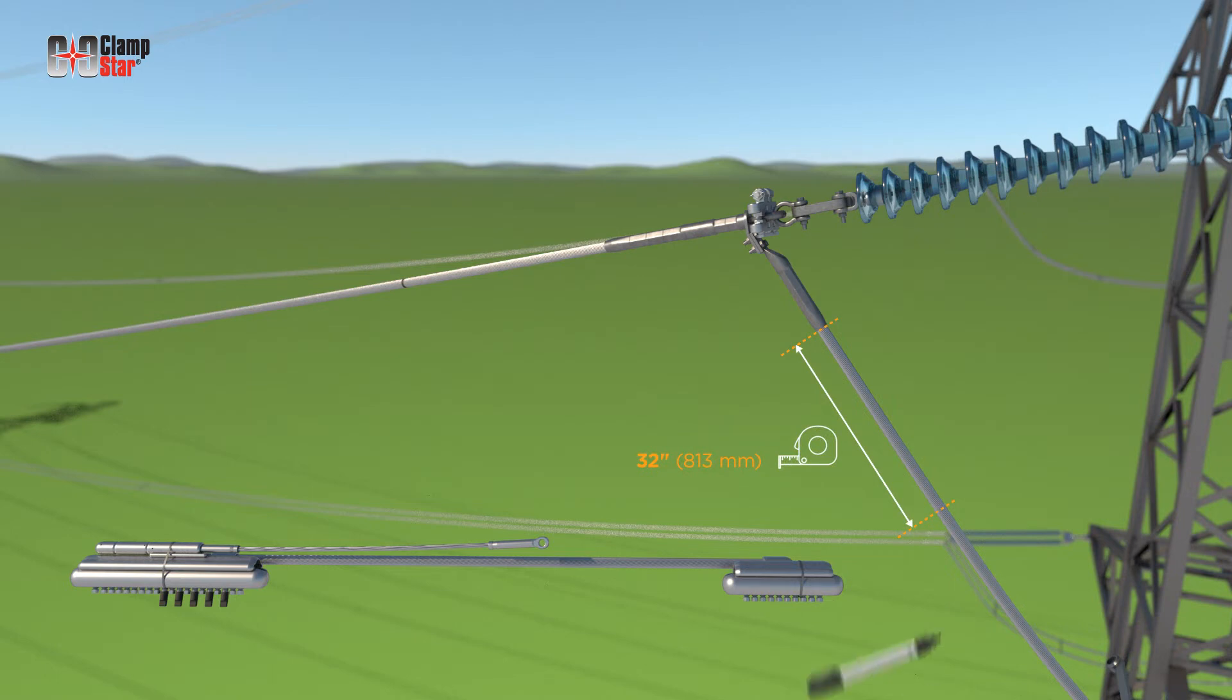On the jumper conductor, mark 32 inches from the terminal connector and wire brush the conductor. Dry brushing is all that is required. Inhibitor is preloaded from the factory in the conductor grooves of the ClampStar and on the keepers as required. No other inhibitor is to be used.